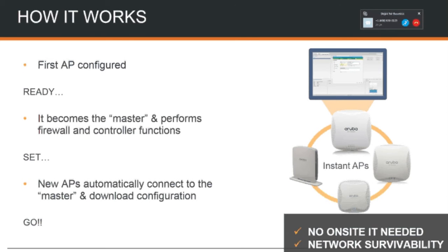And down below there you'll see it says network survivability. What's really cool about Instant is, let's say we have 50 access points and your virtual controller goes down for whatever reason — the next one that comes up elects itself as the virtual controller by default. So you can have 50 APs go down to a single AP and still have a virtual controller. Any one of the APs can act as that master access point.